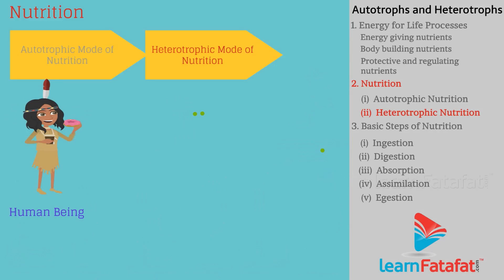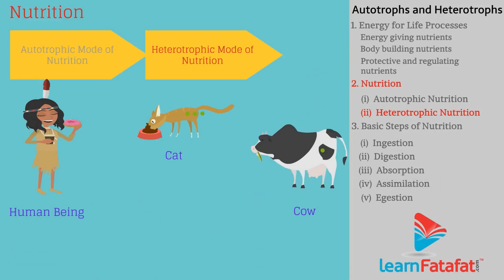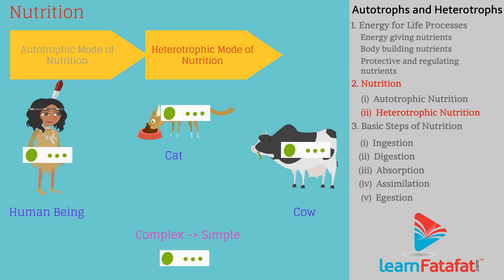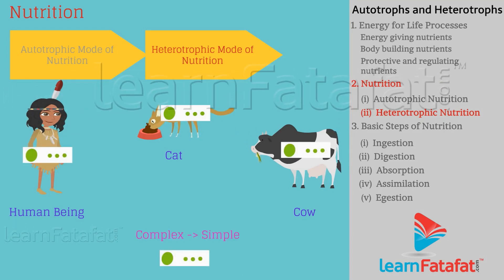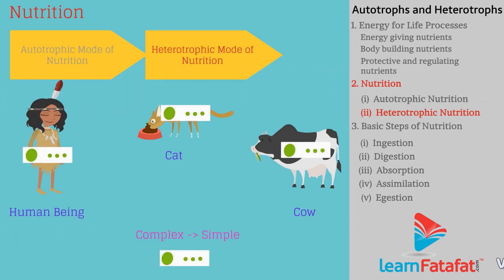Organisms like human beings, cats, and cows take whole food inside the body and then break down the complex substances into simple substances inside the body.